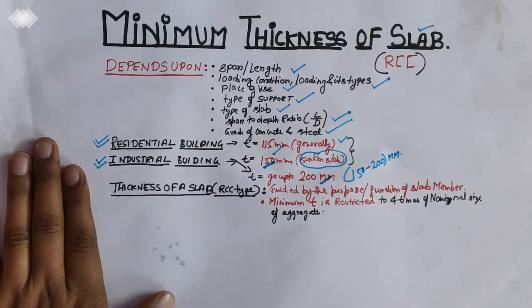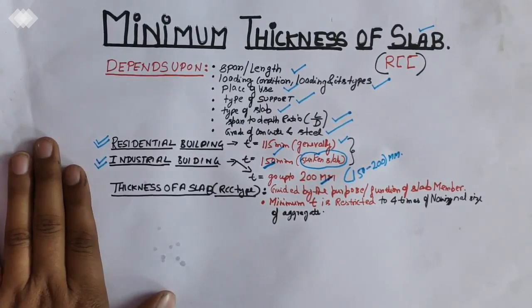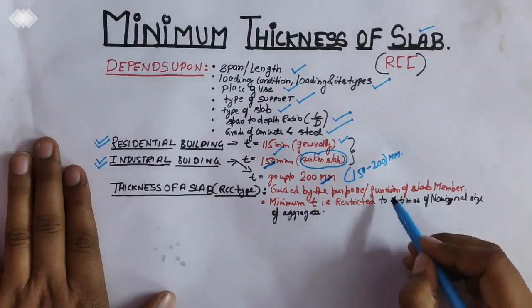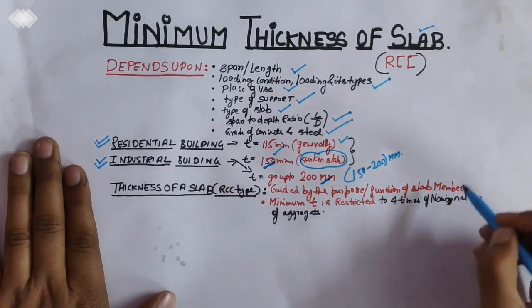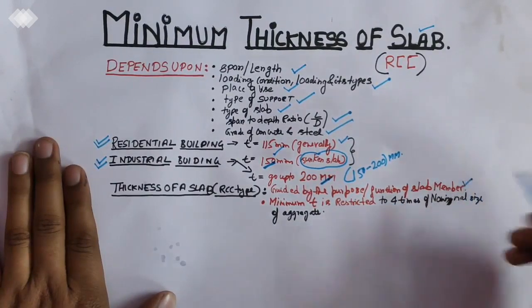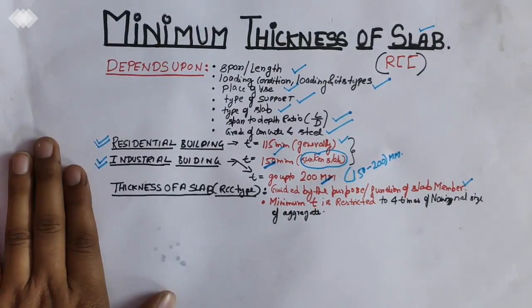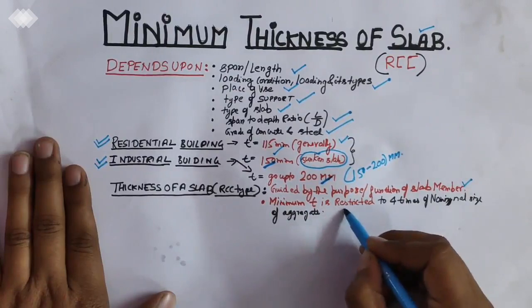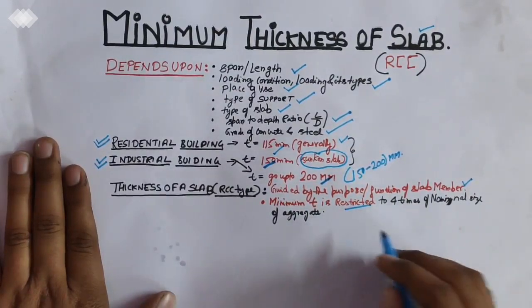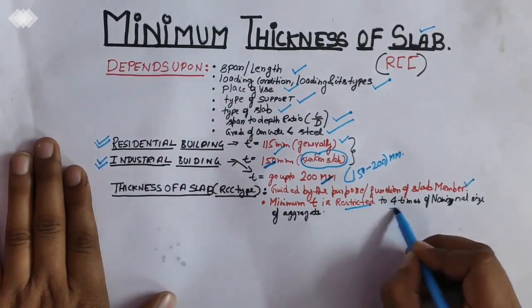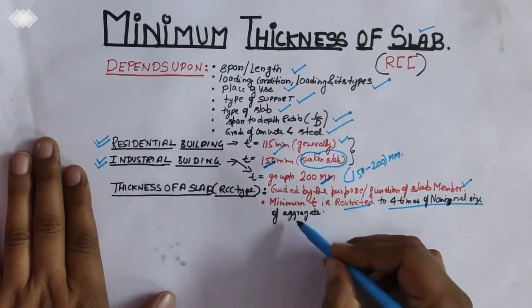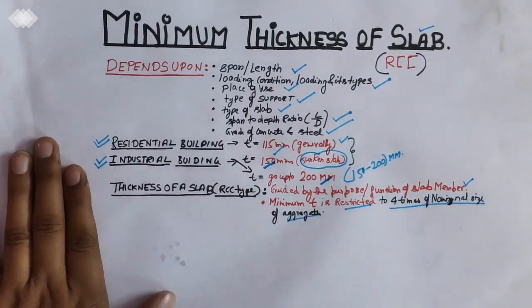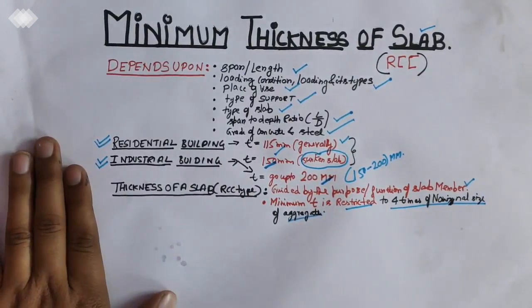Now, the thickness of a slab that is of RCC type reinforced concrete, what is main purpose? It is guided by the purpose. For the type of a slab member, minimum thickness is restricted to four times of nominal size of aggregate. So this is the important type.